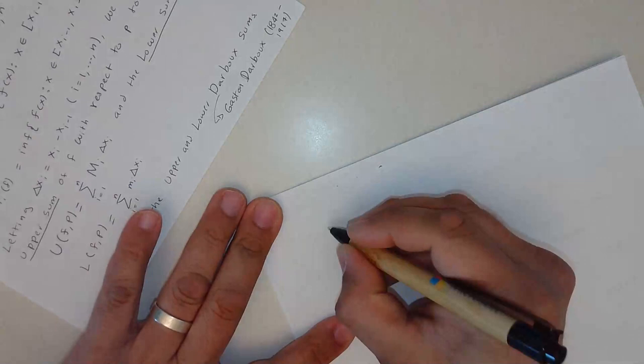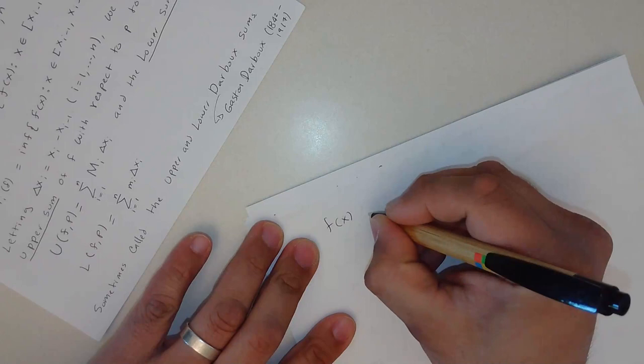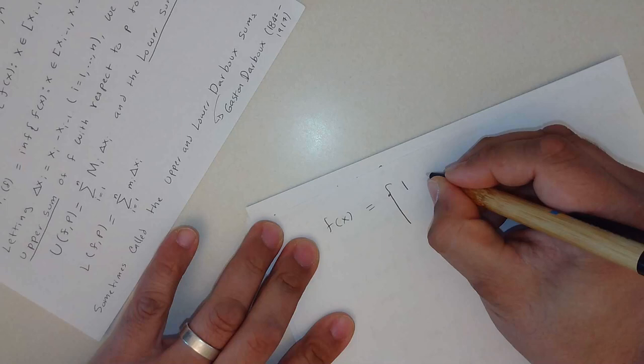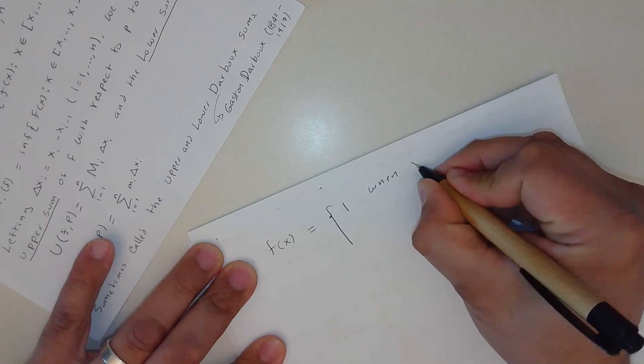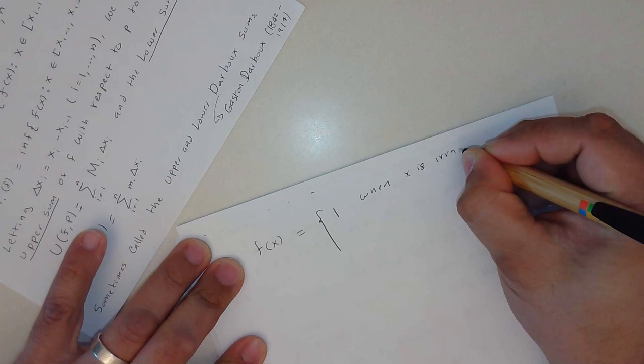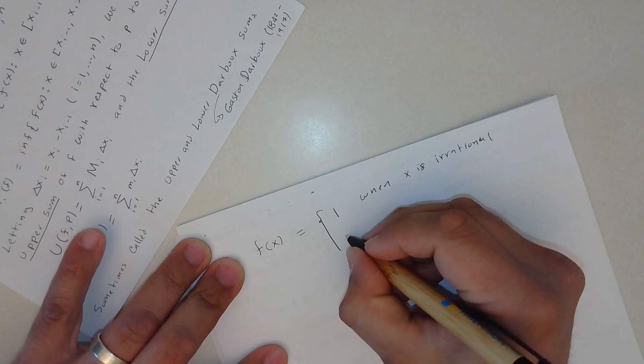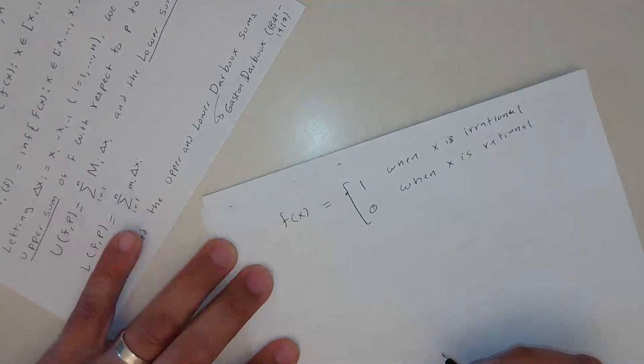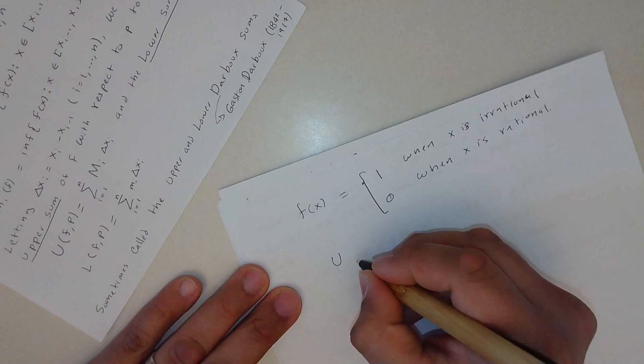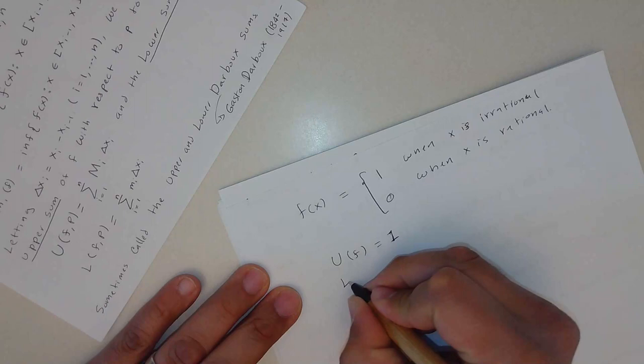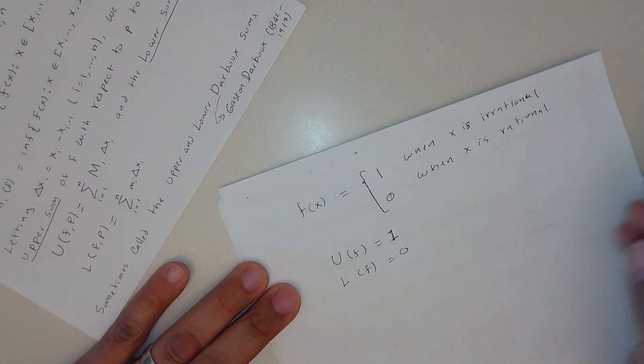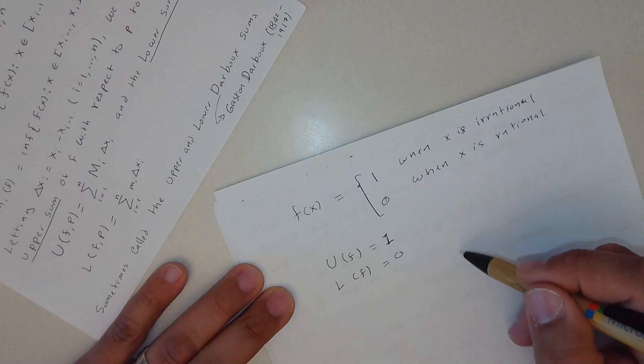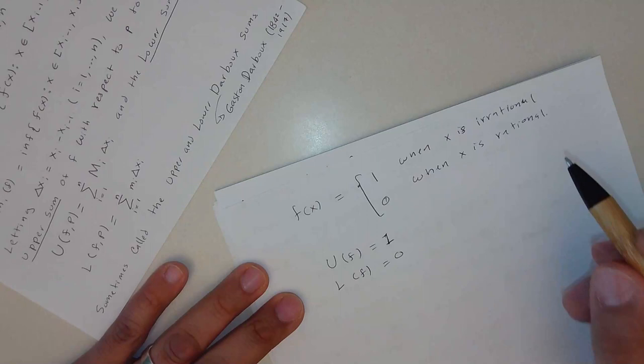Let's imagine, for example, a function f(x) whenever, let's say it is 1 when x is irrational, and 0 when x is rational. In this case, always the upper integral of f will be 1, and the lower integral of f will be 0, right? Because at any point that we have, we will have an irrational number which is up in 1, and we will have 0 at any of the rational. And the rationals, all these numbers are dense, right?